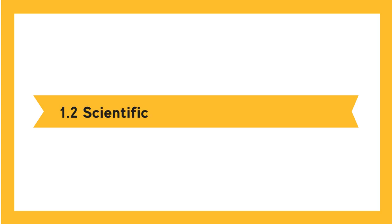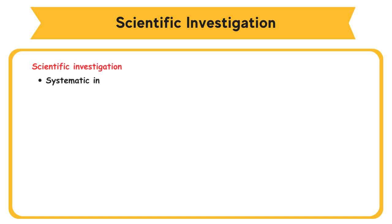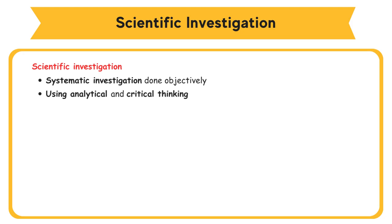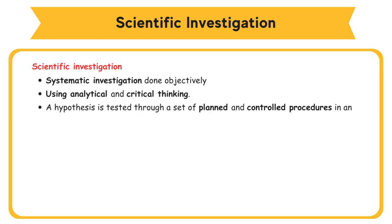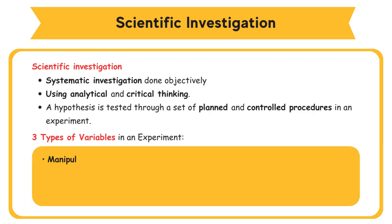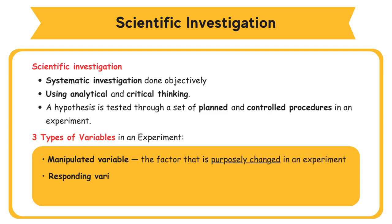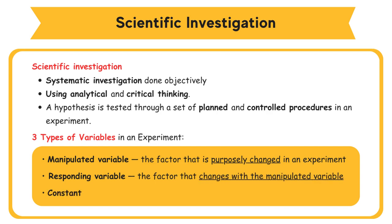1.2 Scientific Investigation in Chemistry. Scientific investigation is a systematic investigation done objectively using analytical and critical thinking. A hypothesis is tested through a set of planned and controlled procedures in an experiment. There are three types of variables: first, manipulated variable — the factor that is purposely changed; second, responding variable — the factor that changes with the manipulated variable; third, constant variable — the factor that is kept constant in an experiment.